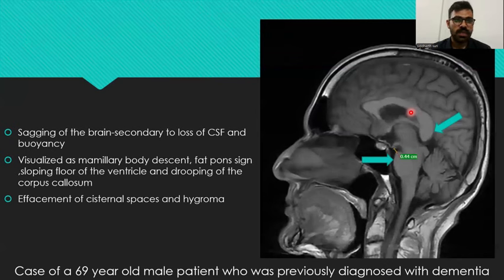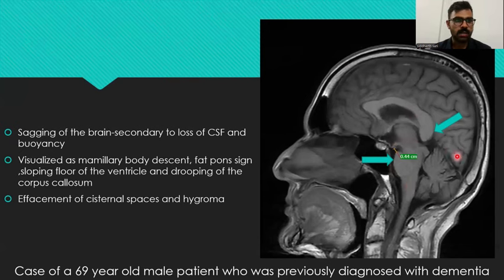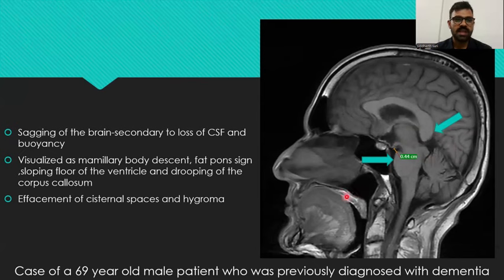Sagging of the brain, secondary to the loss of CSF and buoyancy, is visualized as mammillary body descent, the fat porn sign, sloping of the ventricle, and drooping of the corpus callosum as depicted here. Effacement of cisternal spaces and subdural hygromas may also be seen. This is demonstrated in a case of a 69-year-old male patient previously diagnosed with dementia.